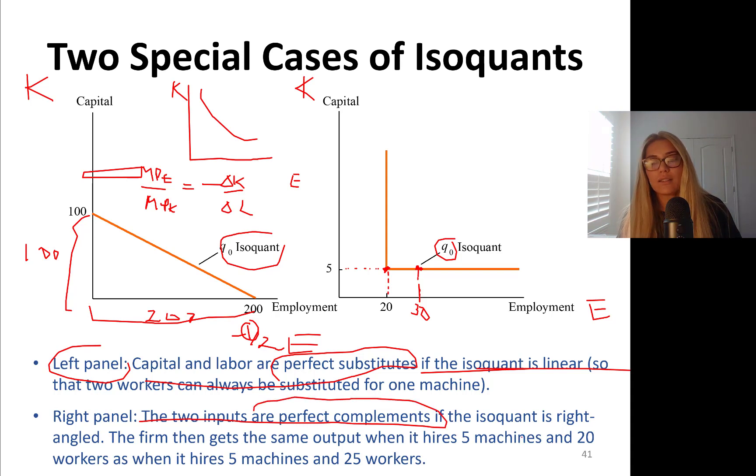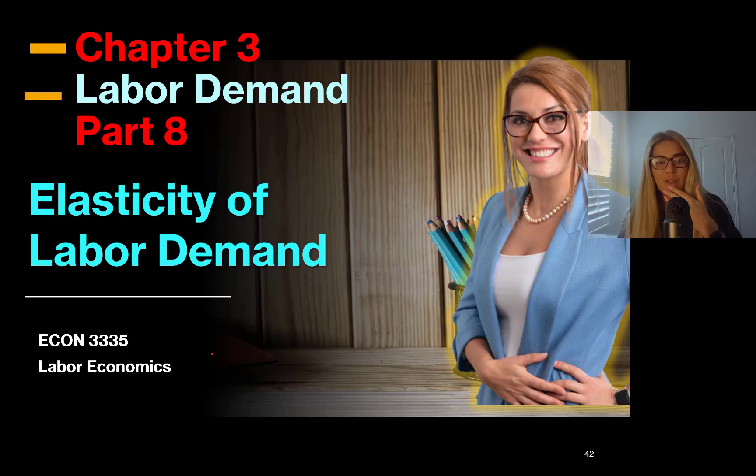So if the isoquant is right angled, so it's like L-shaped, the firm then gets the same output when it hires 5 machines and 20 workers or when it hires 5 machines, 25 workers or 30 workers or 100 workers. So it's like me drinking my coffee, I put exactly one pack of sugar. If I put two packs of sugar, the proportion is destroyed, so I'm not enjoying it.